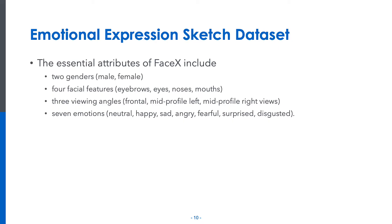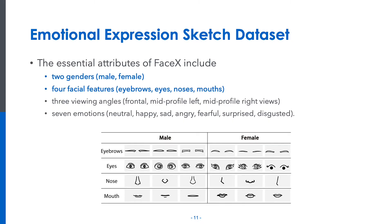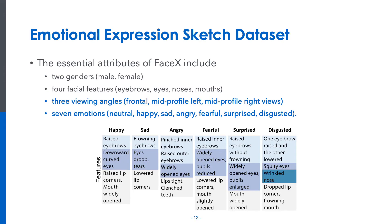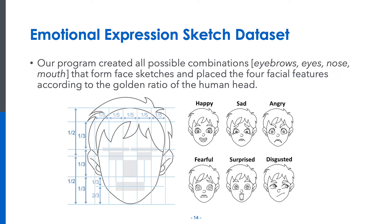The five designers were instructed to draw sketches of four facial features with these identified attributes. They started with sketching one facial feature with a neutral expression in a frontal view. Then the designers sketched six more expressions and two more viewing angles of each facial feature design, resulting in 21 sketches in total for one design. To ensure the expressiveness of sketches generated by our approach, we summarized the salient features for depicting six basic emotions. For example, a wrinkled nose is often used by designers to convey the emotion of disgust. Finally, our program created all possible combinations that form face sketches and placed the four facial features according to the golden ratio of the human head. For example, the head is 3.5 units high and the eyes are approximately halfway down the head.